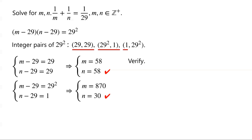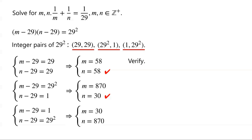For integer pair (1, 29 squared), we have m minus 29 equals 1, and n minus 29 equals 29 squared. So m equals 29 plus 1, which is 30, and n equals 29 squared plus 29, which equals 29 times 30, which equals 870. When m equals 30 and n equals 870, the left-hand side equals 1/30 plus 1/870, which equals 29/870 plus 1/870, which equals 30/870, which equals 1/29, equal to the right-hand side. So it is a solution of the original equation.